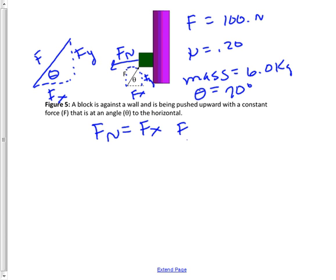In this case, force normal would equal 100 times the cosine of 70. And that equals 34.2 newtons.